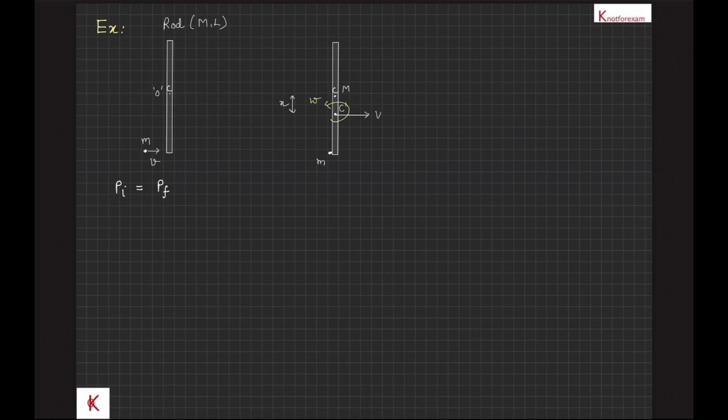What will be the angular velocity after the collision? Let velocity of center of mass of the combined system after the collision is v. Then mv equal to m plus m into v or v equal to mv upon m plus m.